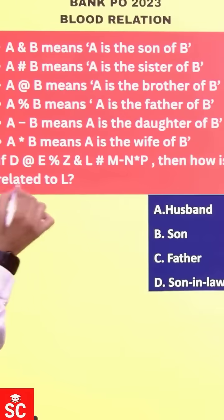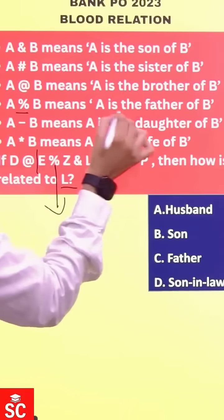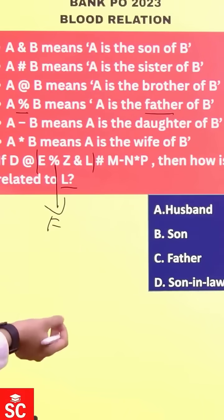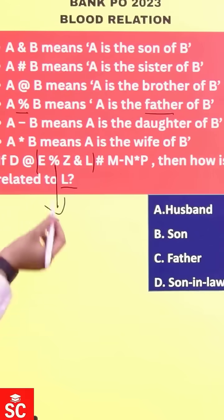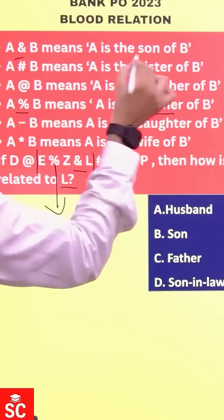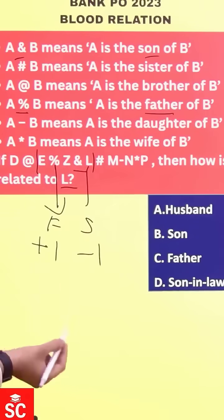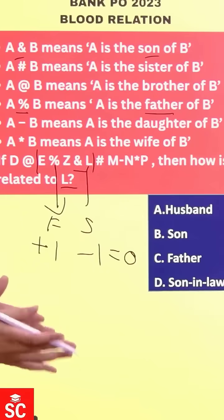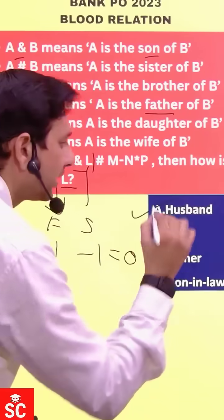How is E related to L? The first symbol is a percentage. Percentage means father, so E is a father — it is defined that E is a male person, and in the options all are males. We are moving up one step, so it's a plus one generation gap. The next symbol, 'and', means son, so we are moving down one step: minus one. Plus one minus one equals zero. The generation gap is zero, so the relation remains at the same level. The answer is husband.